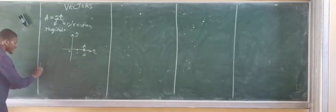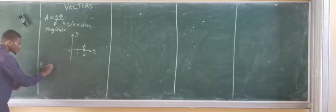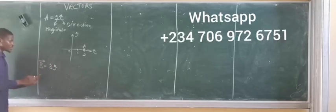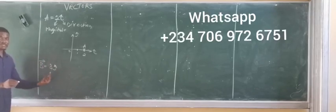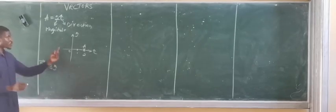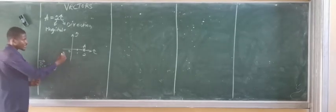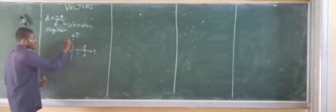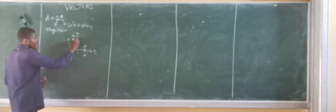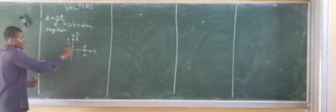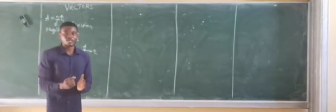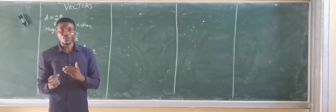Let's say I have another vector, vector B equal to 3J. In this case, 3 is the magnitude of position vector B, and J is the direction of vector B. Representing this on the graph, vector B is found at this point in the J direction. So vectors always have magnitude and direction — that's why we call them a vector.